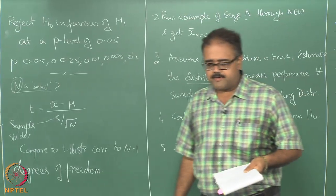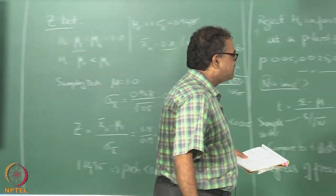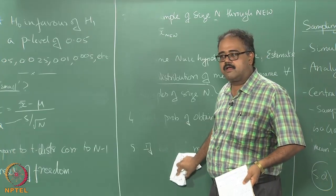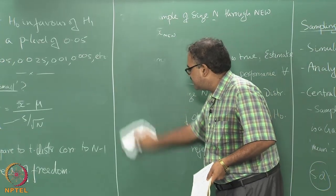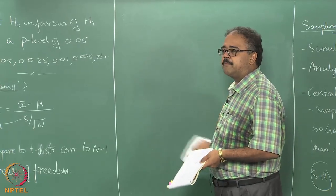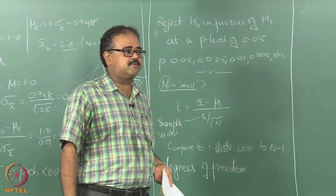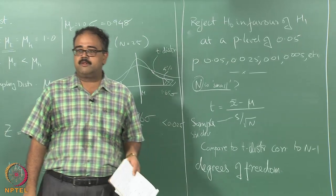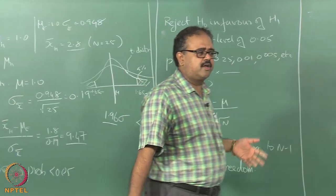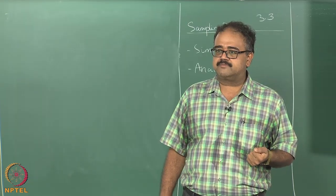One important thing about the t-distribution is that it assumes the underlying distribution from which the samples are drawn — the population distribution — is normal. Earlier with the sampling distribution, we did not have to worry about the underlying population distribution; regardless of it, the sampling distribution was normal. But the t-distribution assumes the underlying distribution is normal. In practice, however, it is extremely robust — you can run t-tests on arbitrary distributions and still get reasonable answers, provided the distribution is not too skewed, so it gives reasonable answers for most distributions you would likely see in practice.